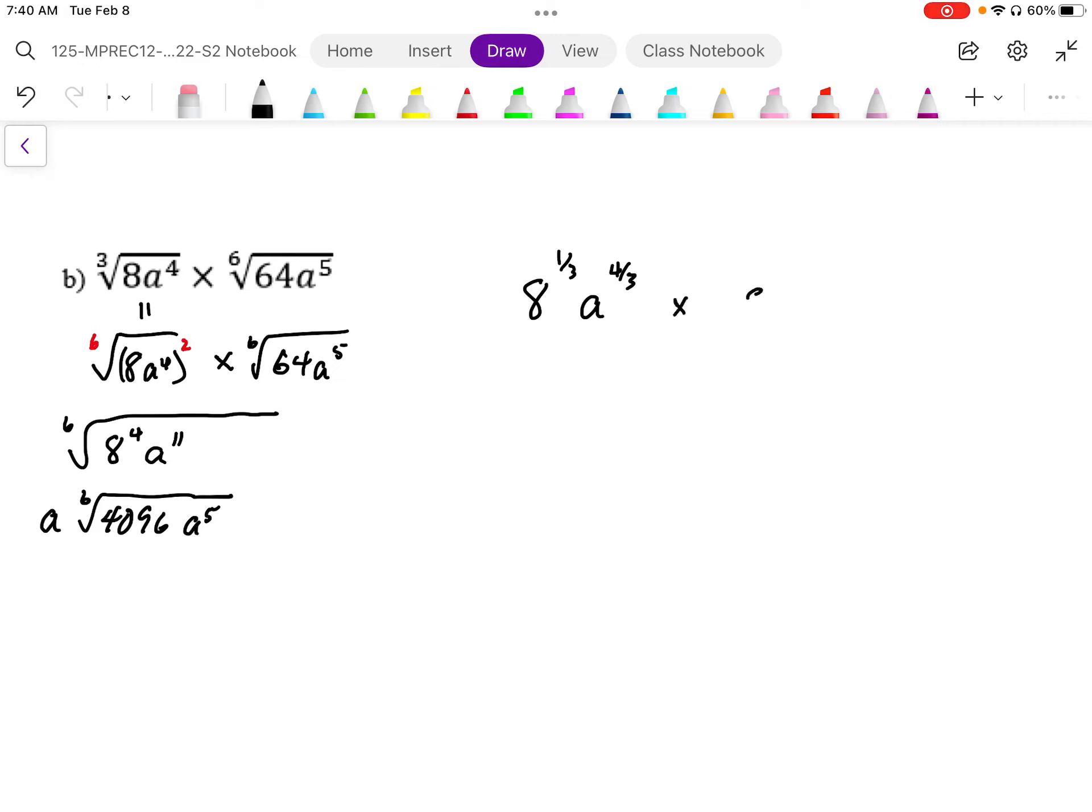Times, and we can write this as 8 squared to the power of 1 sixth. And this becomes a to the power of 6 over 5.